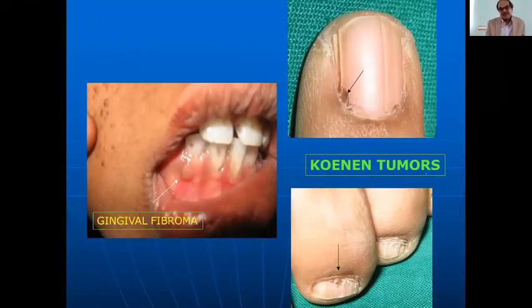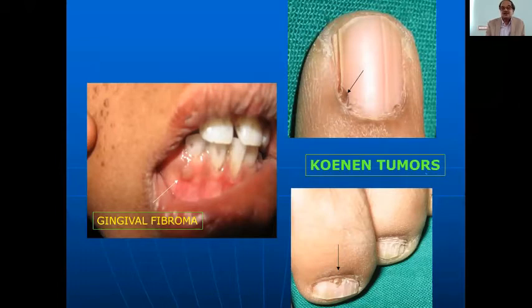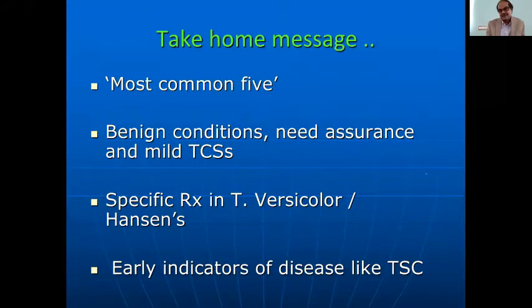If you are more clinically oriented, look in the mouth for gingival fibromas, and examine the nails for Koenen tumors. The take-home message for hypopigmented lesions: the most common five are benign conditions needing assurance and mild topical corticosteroids. Give specific treatment for tinea versicolor and Hansen's disease. They can be early indicators of tuberous sclerosis, and pigmentary mosaicism can be associated with seizures and other systemic involvement.